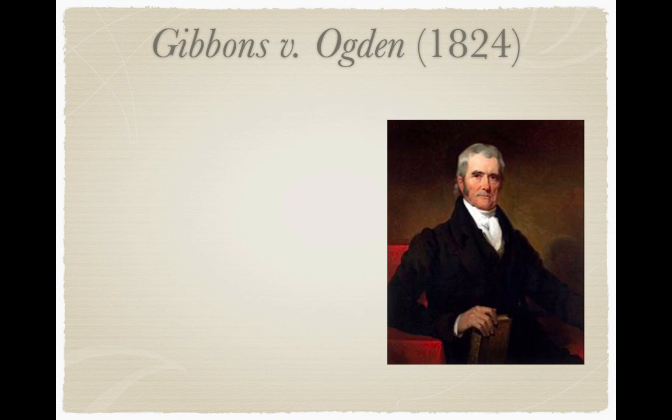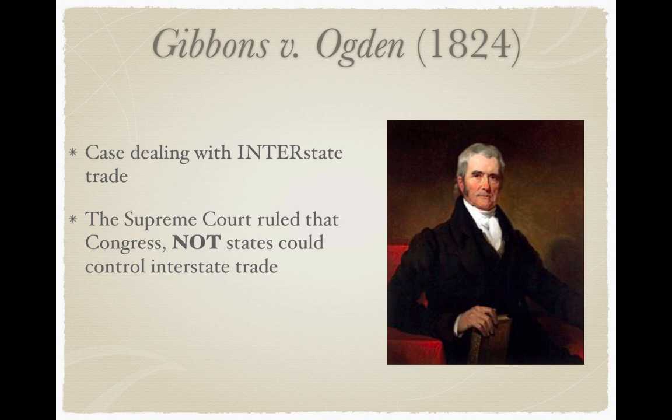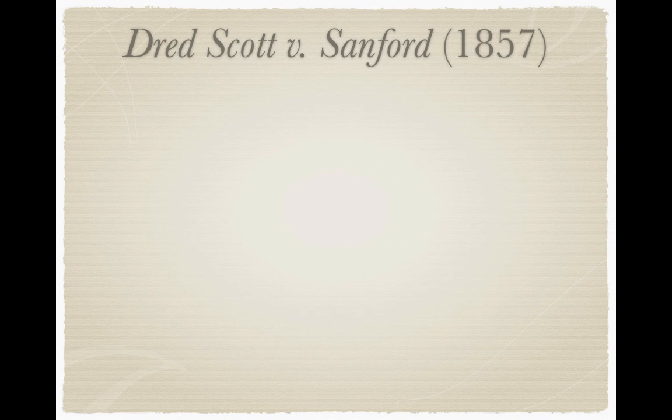Gibbons v. Ogden — another John Marshall Court case from 1824 — dealt with interstate trade, or trade between two or more states. The Supreme Court ruled that Congress, not individual states, could control interstate trade. Again, chalk one up as a victory for the federal government over states — they are supreme yet again.